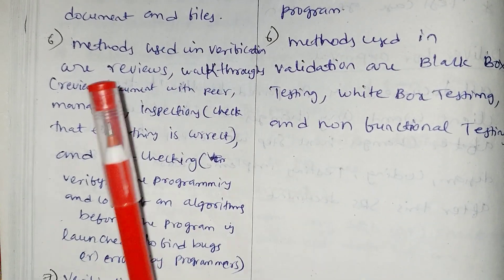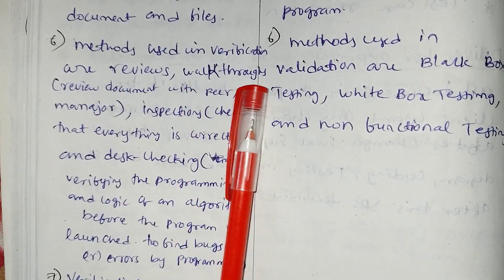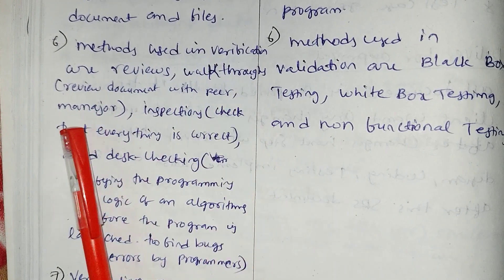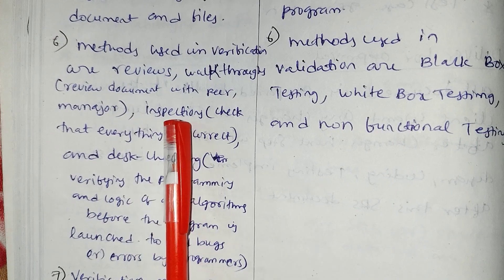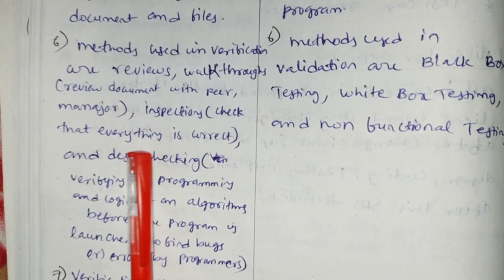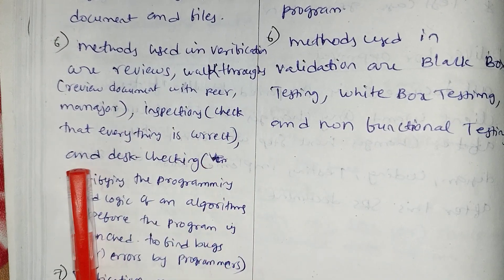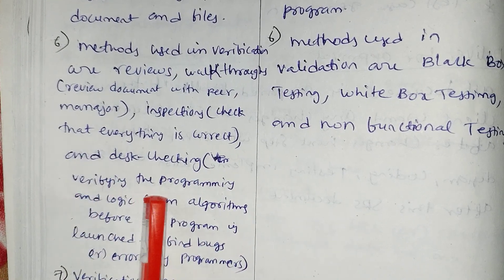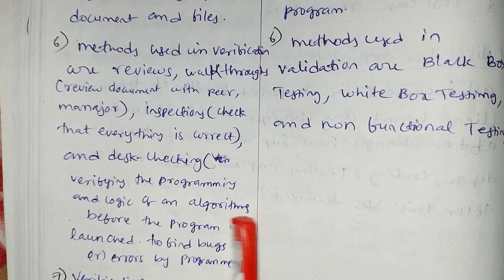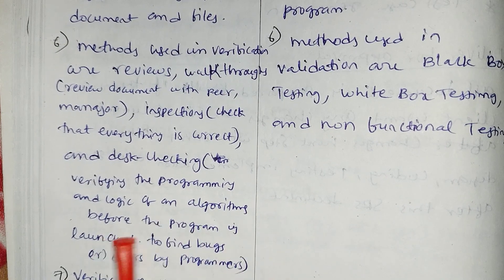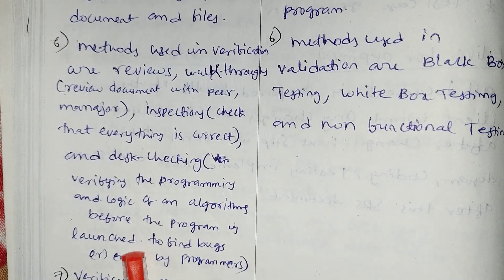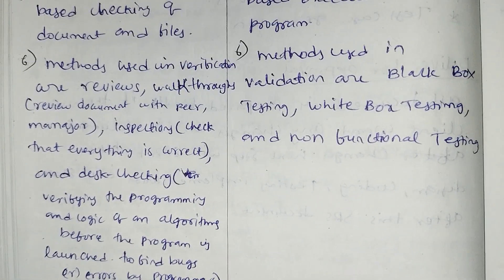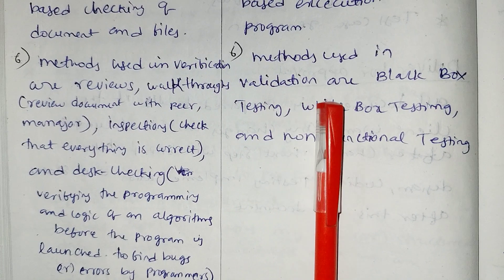Methods used in verification are: reviews, walkthroughs — reviewing documents with peers and managers — and inspections, checking that everything is correct. Also desk checking, which means verifying the programming logic of an algorithm before the program is launched, to find bugs and errors.